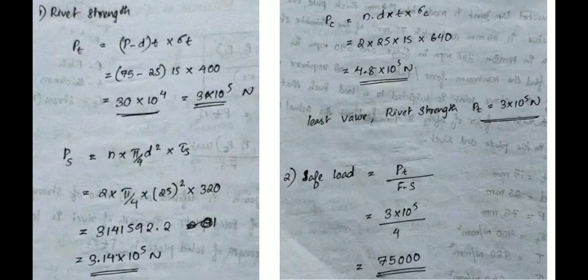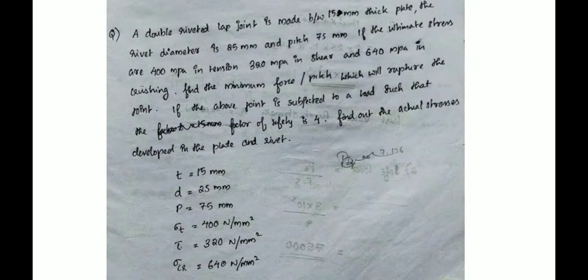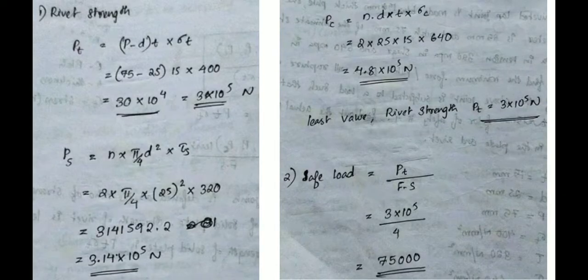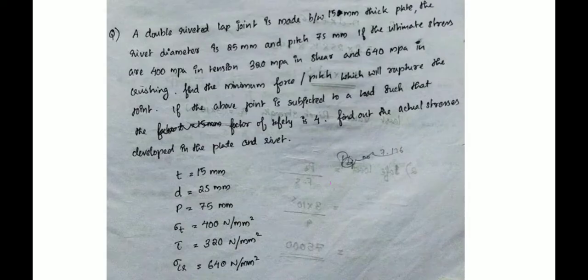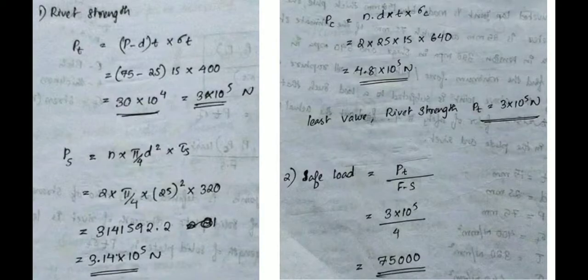Next is the shearing equation: Ps = N × (π/4) × d² × τ. Substituting the values with τ = 320 MPa, the total value is 3.14 × 10⁵ N.